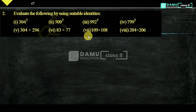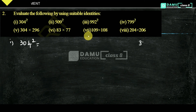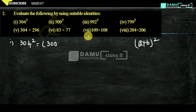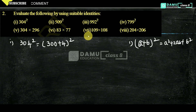The first one is 304 whole square. 304 whole square is somewhat difficult to compute directly. We are going to use the identity (a+b)², where we divide 304 into 300 plus 4. Then we can easily solve it using a² + 2ab + b². This is the first primitive identity we have to learn in algebraic expressions.